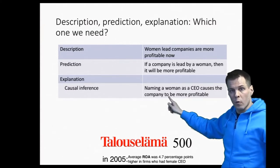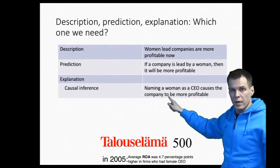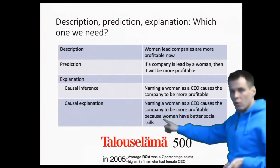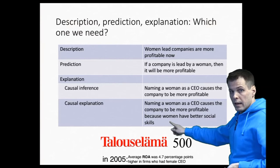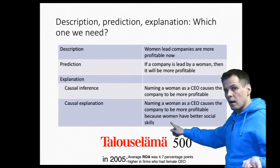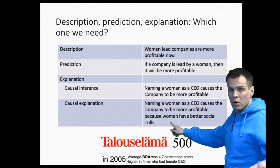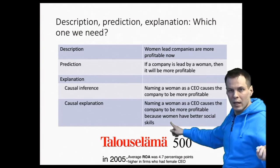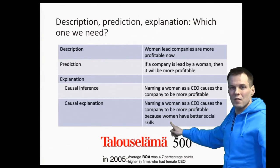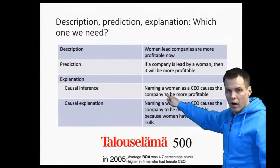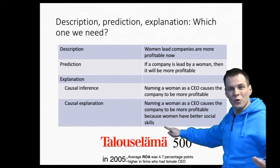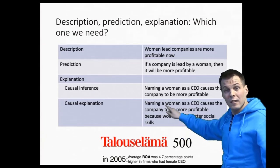There is still a fourth level of claims we can make, which goes beyond statistics, and that is causal explanation. Causal explanation differs from causal inference in that we don't only claim that it's a woman that causes the company to be more profitable — we also explain why that is the case. Typically, quantitative analysis can get us to the causal inference part, but the explanation needs to come from somewhere else. We don't generally get to make theory from numbers; we can only test claims.